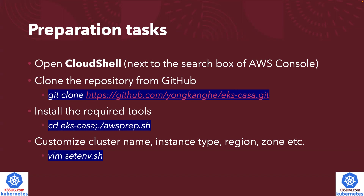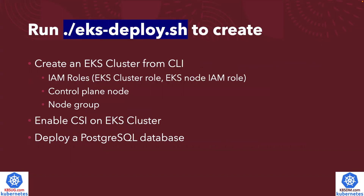You change to the directory and run the awsprepper.sh command. Optionally, you can customize the cluster name, the instance type, the region, zone, etc. — but you don't have to. So the one magic command is called EKS-deploy.sh, and behind the scene I've fully automated all of the tasks listed here.